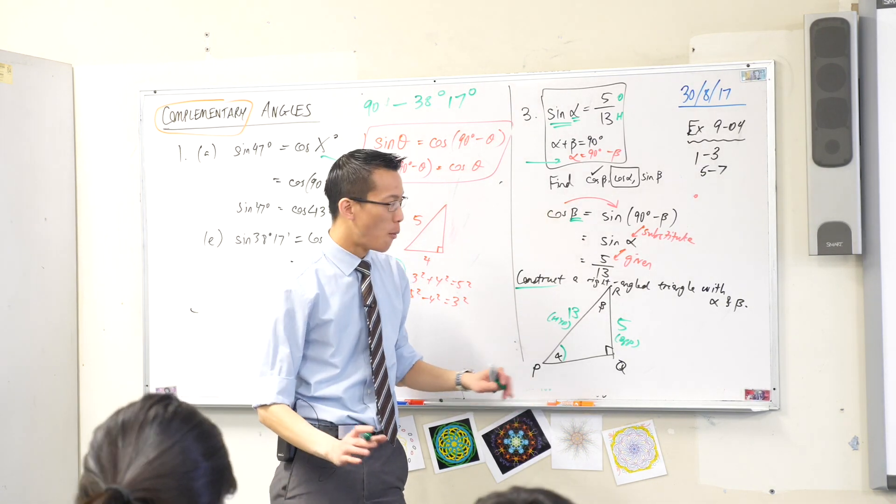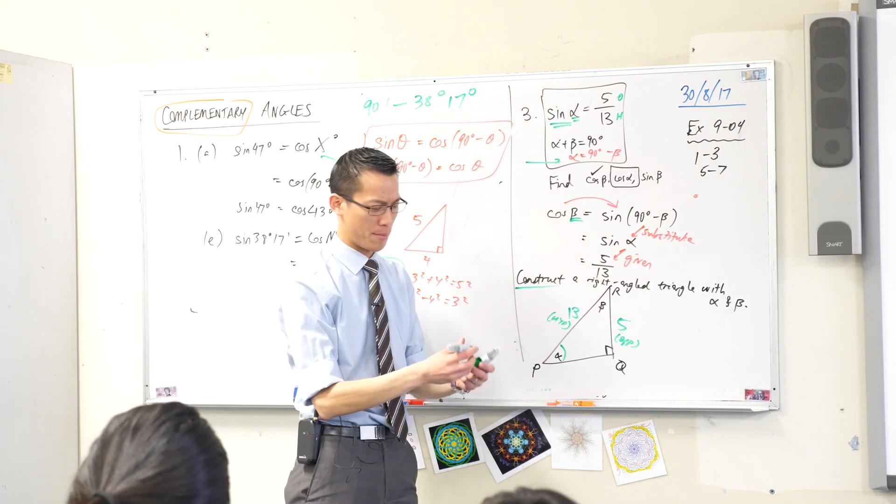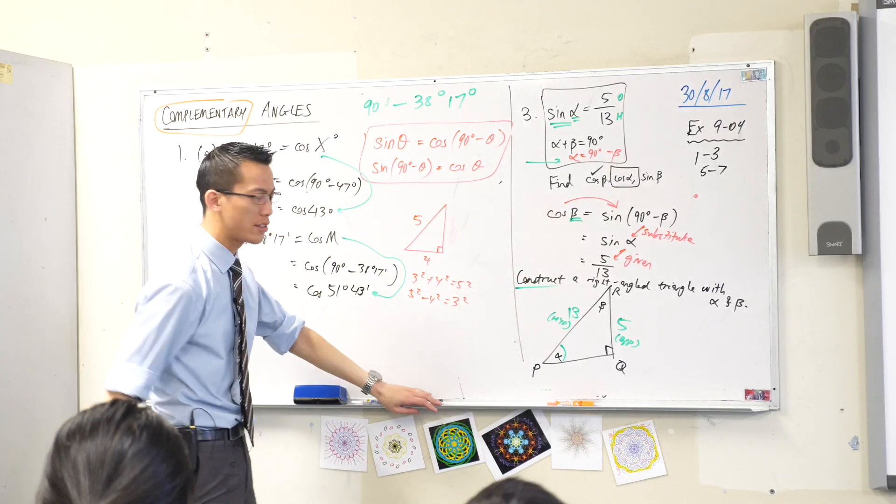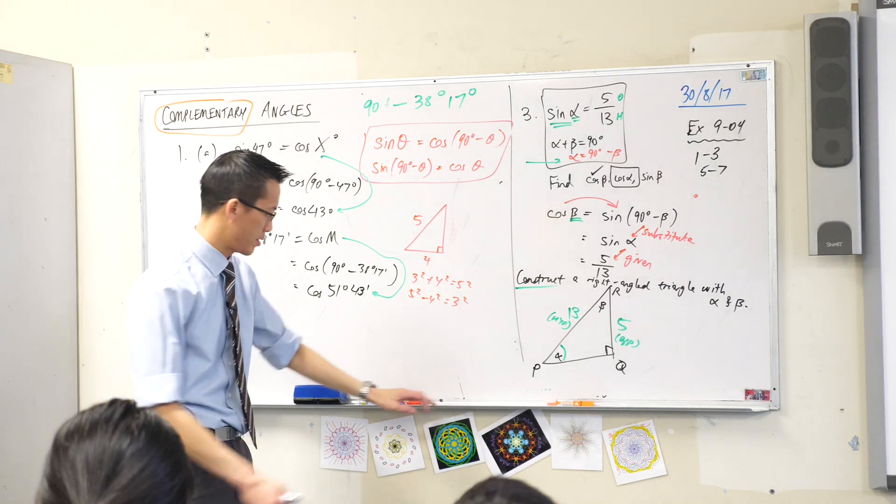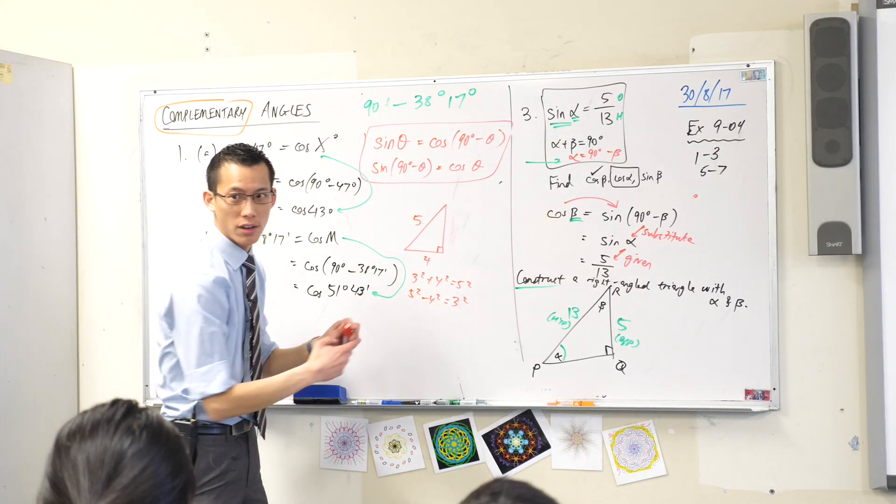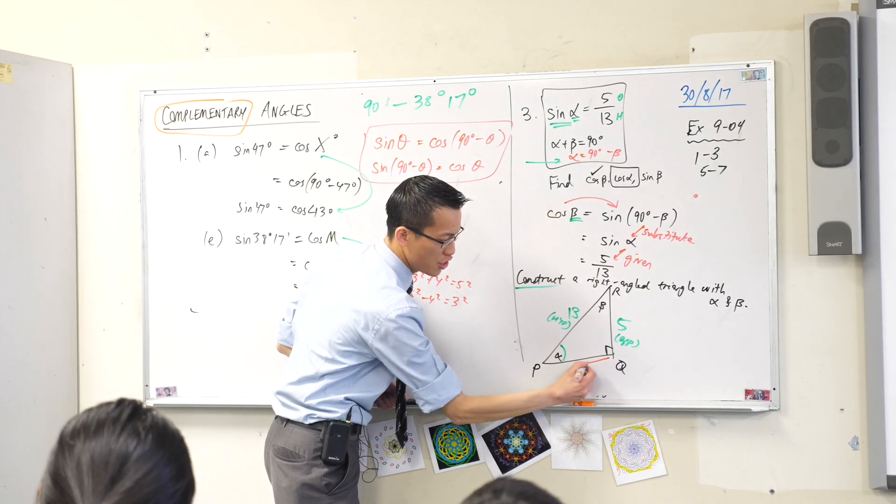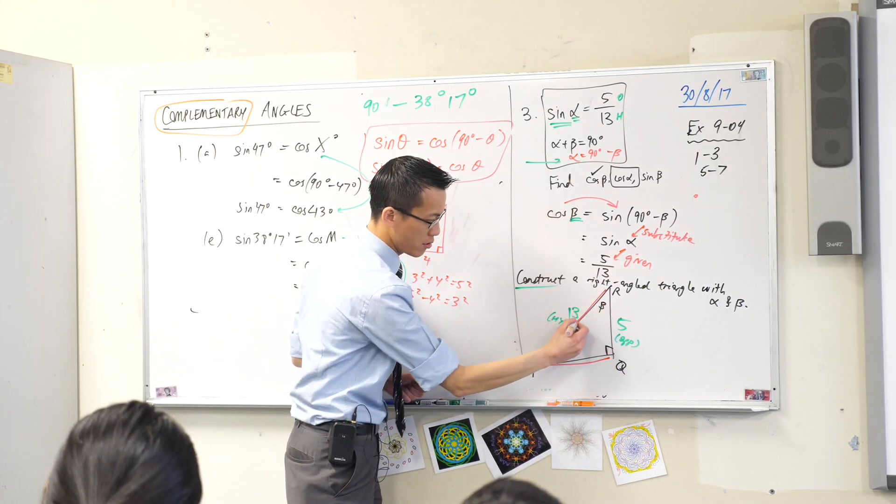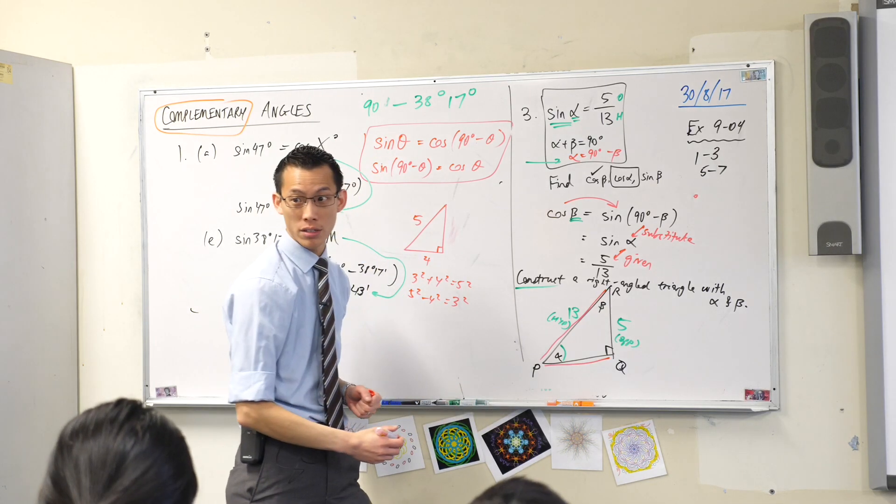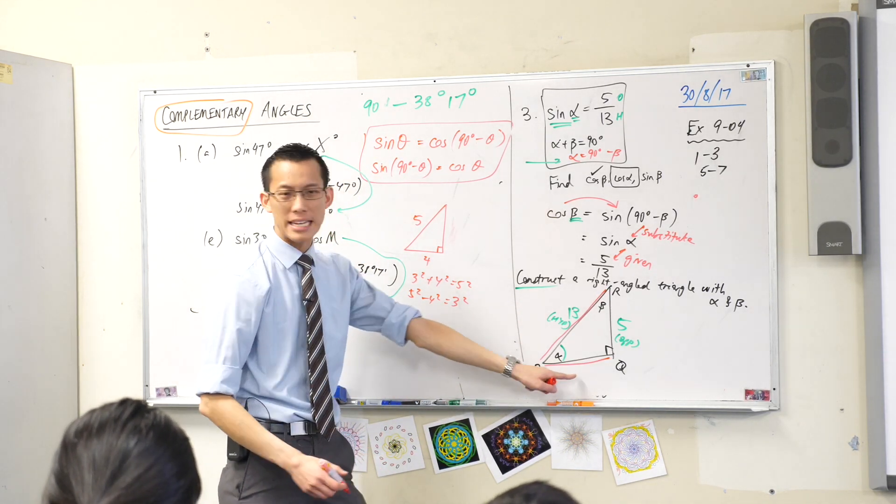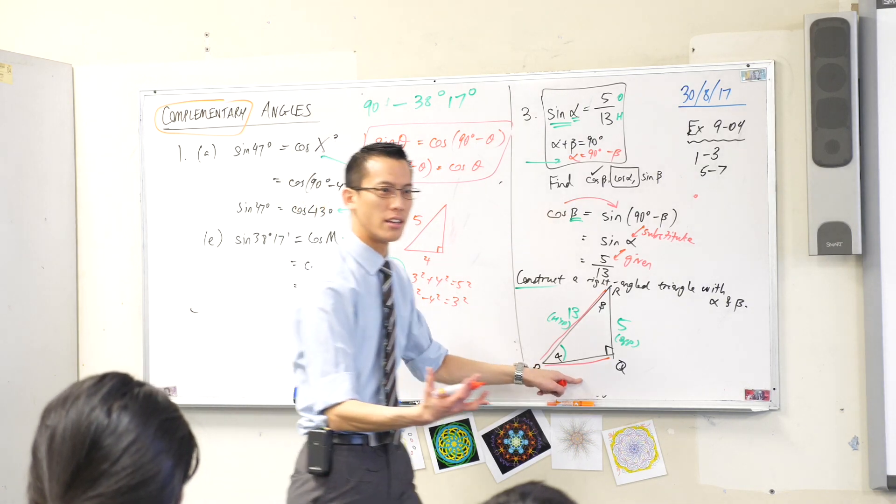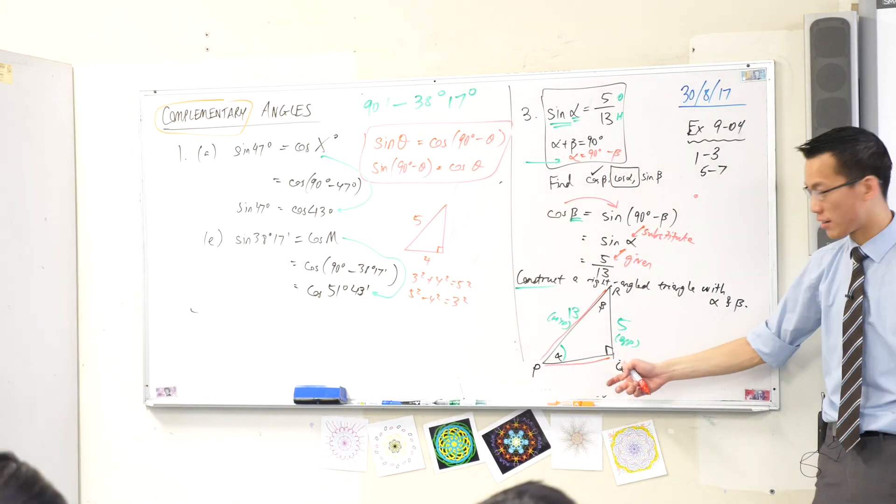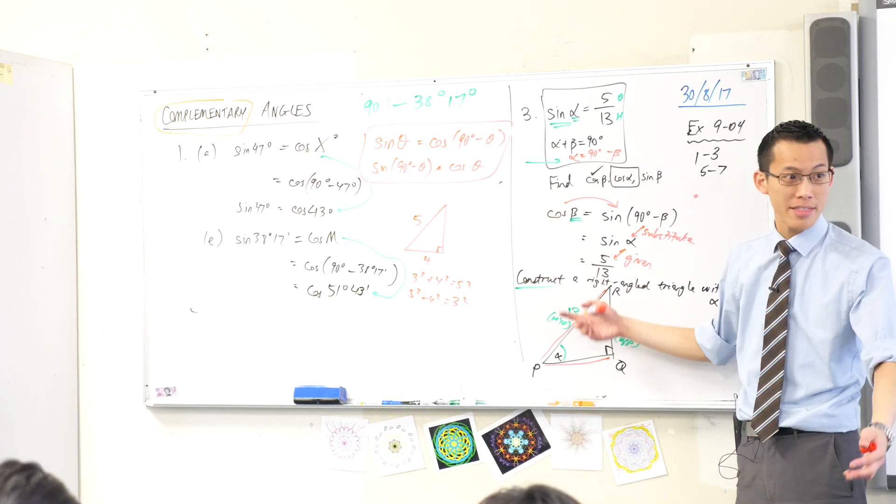So now I'm almost there. And this is why I'm showing you this example because it is hard. Now I want to find cos alpha. Well where is cos alpha in this diagram? Have a look at it. Where is it? Cos alpha, it's going to be adjacent on hypotenuse. Do you agree? Now I know what the hypotenuse but I don't know what the adjacent side is. How do I find it? Pythagoras. Thank you very much. Can you work it out? Can you tell me what this side PQ is? Use Pythagoras. You can find it.